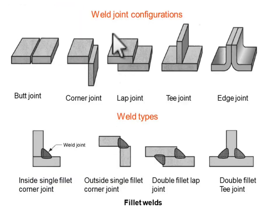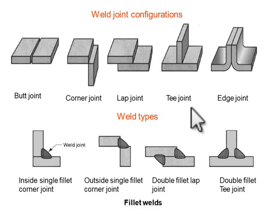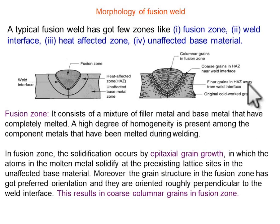These are the joints typically used in welding operations — you may have performed experiments on these in the workshop. They include the butt joint, corner joint, lap joint, T-joint, and S-joint. These are the joints usually used in welding operations.